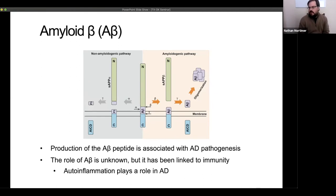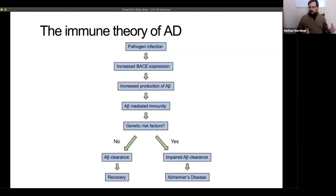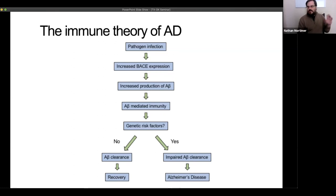What we do know is that A-beta has been linked to immunity, and that auto-inflammation — a generic riling up of the immune response targeting self-tissue — is somehow involved in Alzheimer's pathogenesis. These pieces together have led to what we call the immune theory of Alzheimer's disease. This was first proposed by a researcher named Rob Moir. When he first came up with the idea, everyone in the field thought he was wrong, but when I went to the Alzheimer's disease meeting last year, pretty much every talk was about immunity in some way. Sometimes the people who seem crazy are just a little ahead of their time.